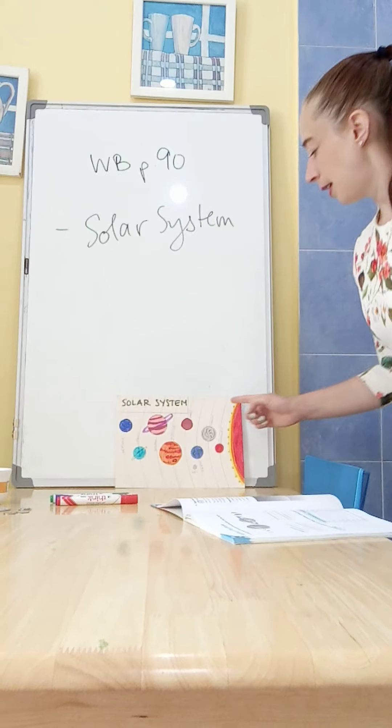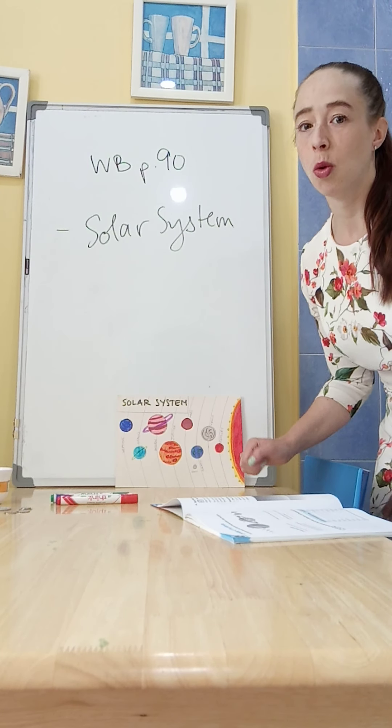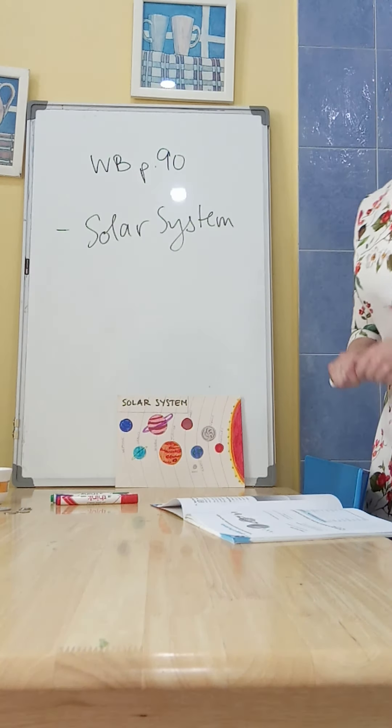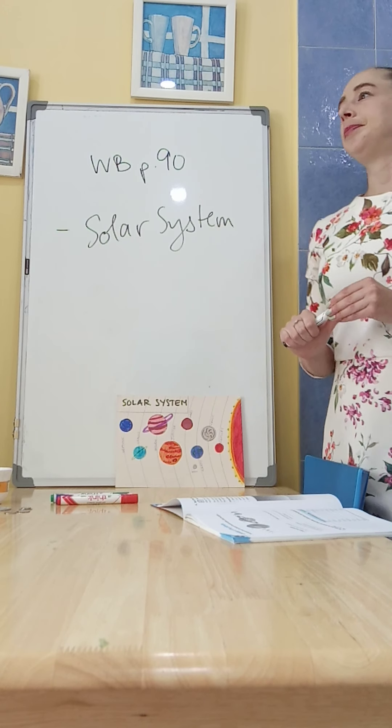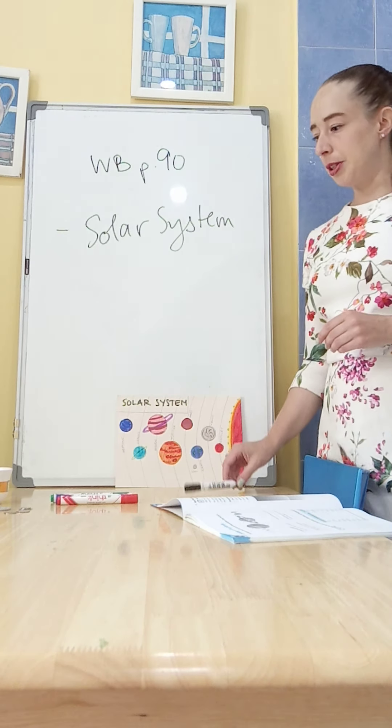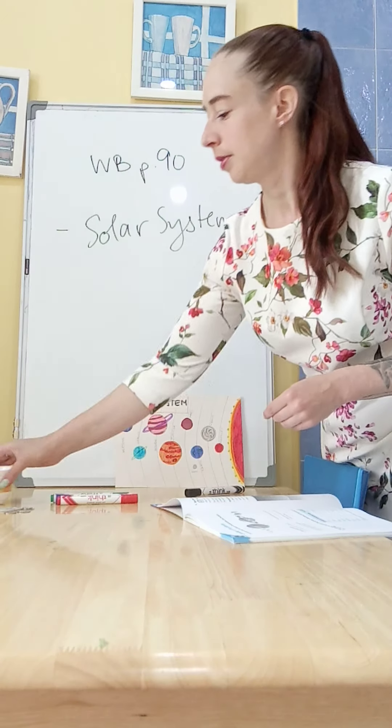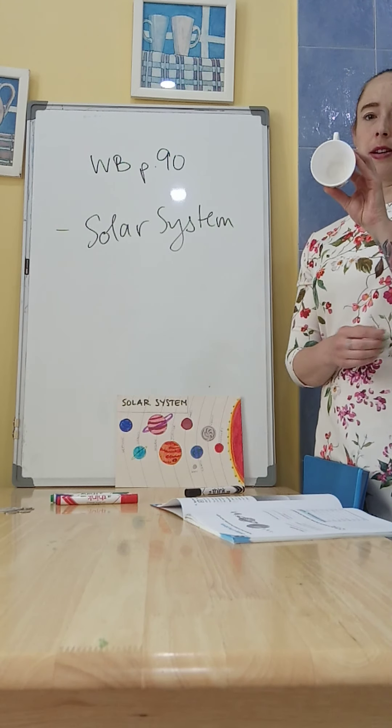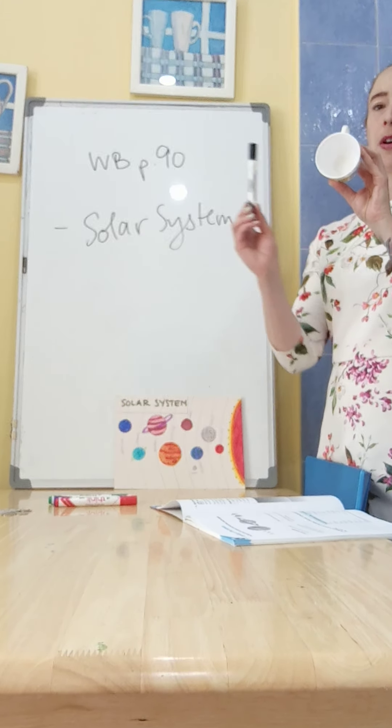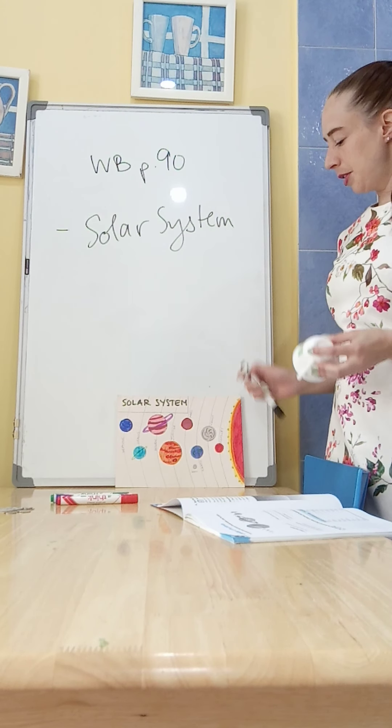These lines here of course are the lines of orbit. We talked about orbit this week. So orbit, we decided, if this is the sun, the planets go around, so they orbit. So these are the lines of orbit and the planets will move along.